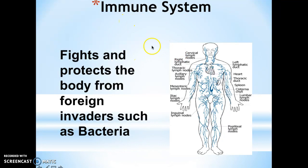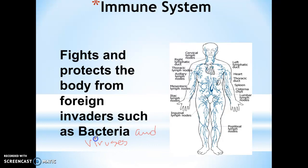The next one is the immune system, and it is one of those systems that is super important for our bodies, because if it was not for this immune system, we basically would not be able to sustain life for too long. The main purpose of the immune system is to fight and protect the body from foreign invaders such as bacteria and viruses. Be sure that you also include bacteria and viruses, because these are things that can definitely cause harm to our bodies.